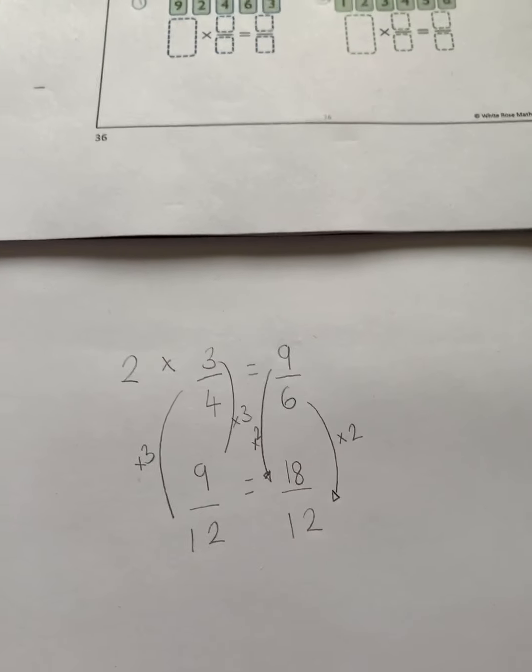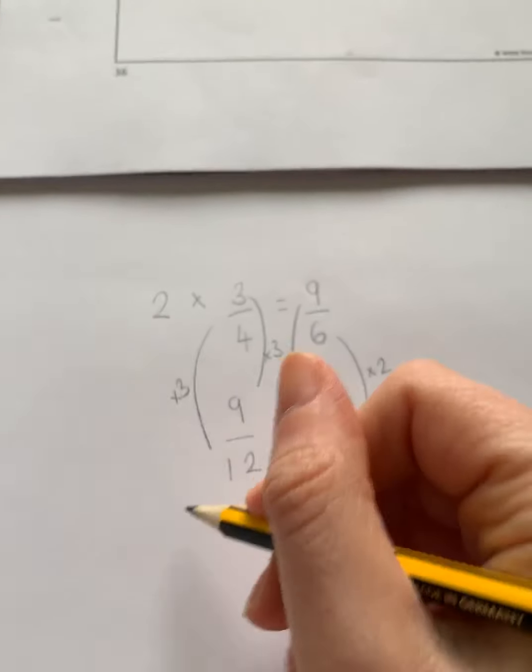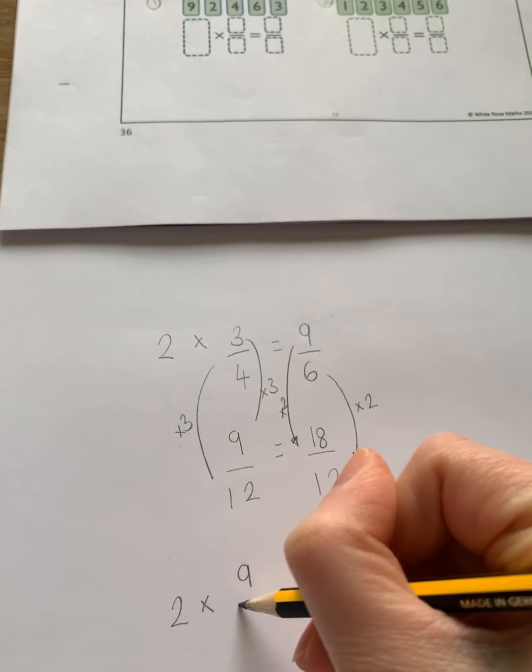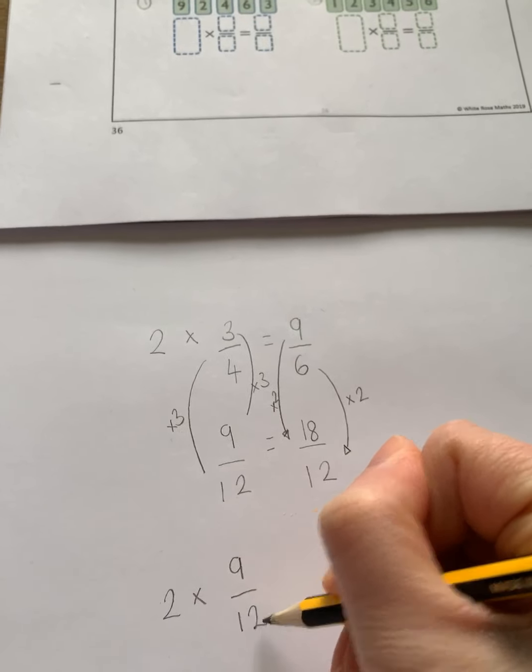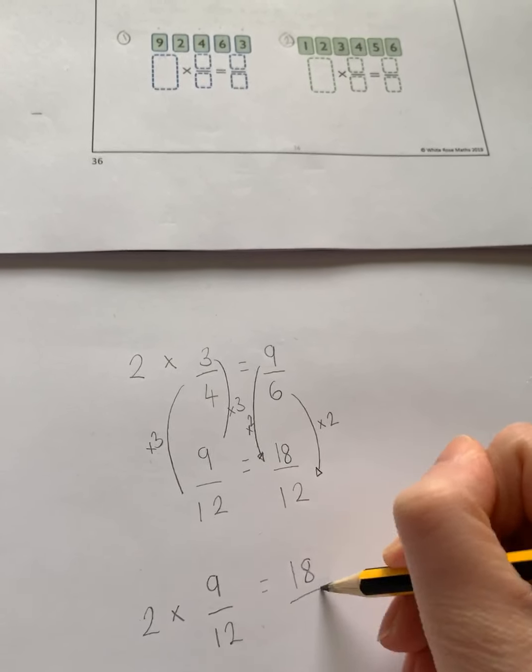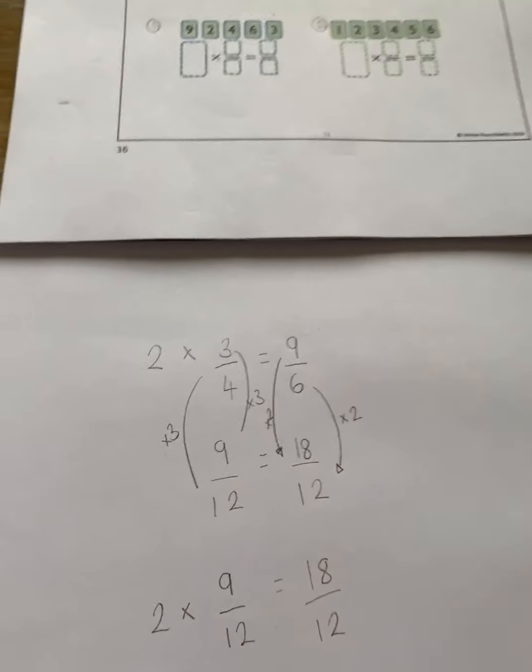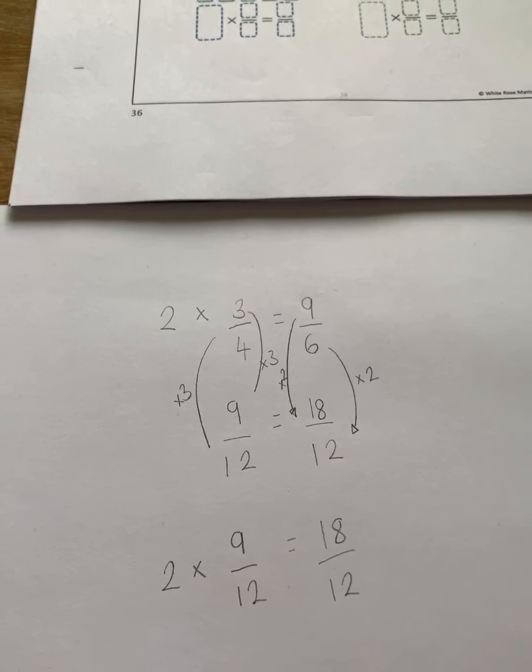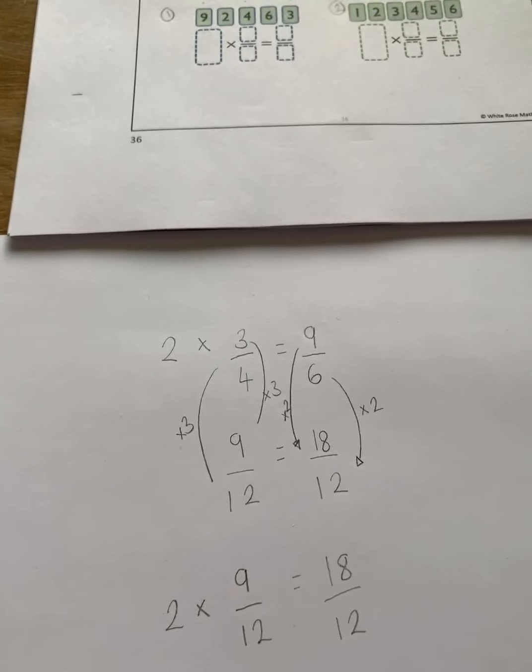So actually if you look here, I can make it a bit clearer, two times nine over twelve is equal to eighteen over twelve. That is really tricky though and it's actually thinking slightly outside the box that it's going to be an improper fraction.